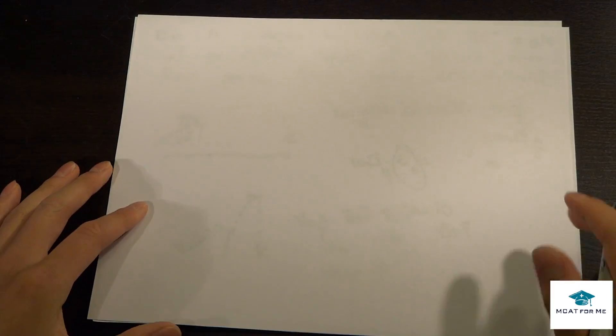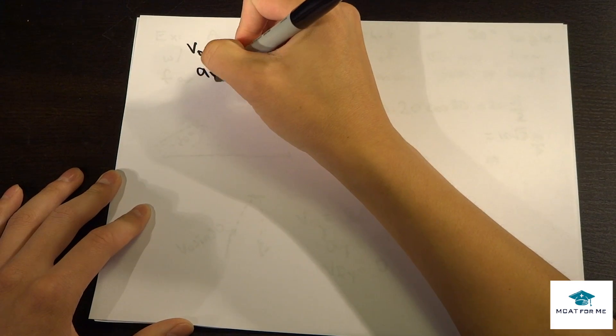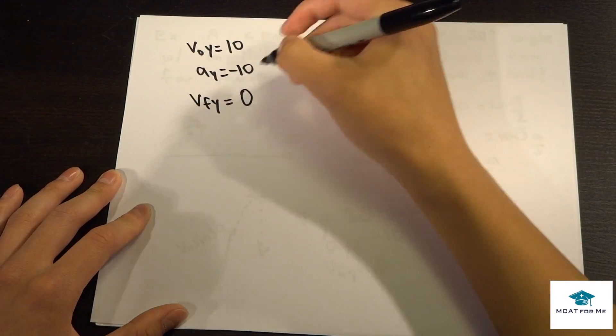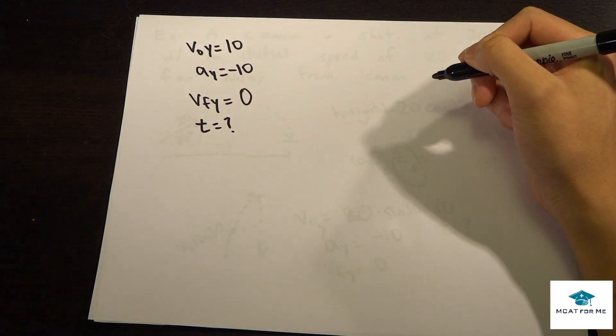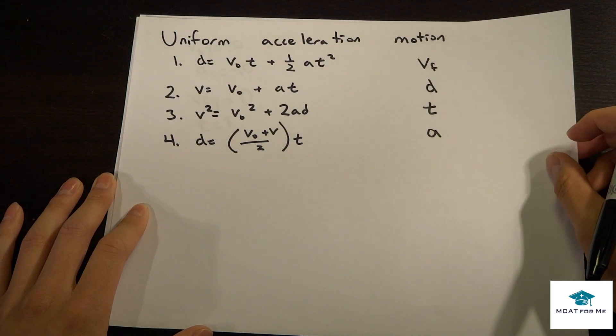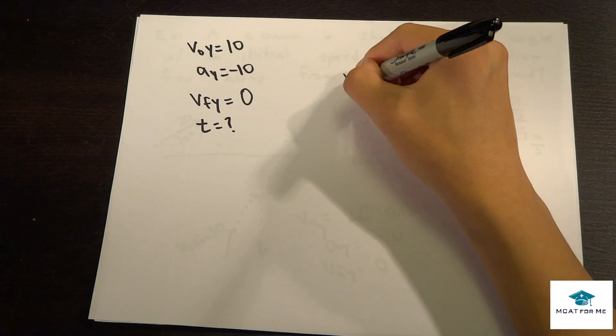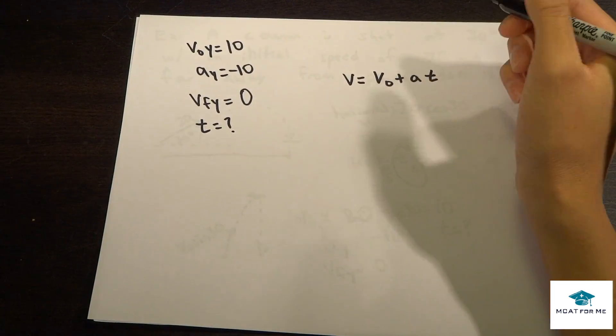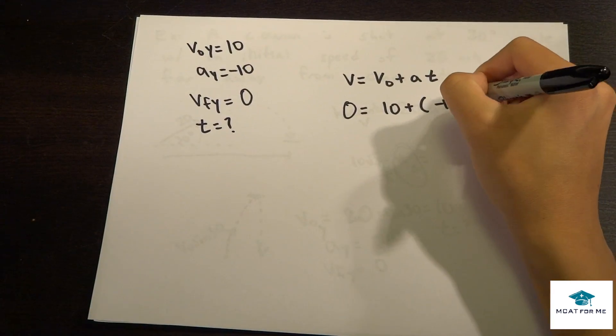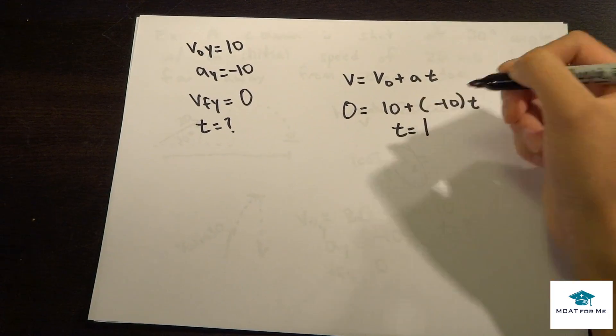Let's try to figure that out. We knew that V0 y is 10, A y equals negative 10, and V final y equals 0. Time is what we wanted to find out. We go back to our equation sheet. We were not given distance, so we're going to use this equation: V equals V0 plus AT. Our V is 0, V0 is 10, A is negative 10, and T is what we want to find out. From this we find that T equals 1.